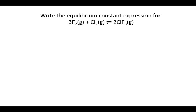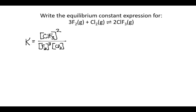Let's do some practice and write the equilibrium constant expression for this reaction. K can be written as the ratio of concentrations of products over reactants. So we'll start with the concentration of our product ClF3 raised to the stoichiometric coefficient of 2, divided by the concentration of F2 raised to the power of 3 and Cl2 raised to the power of 1 — this would be Kc. For Kp, we write the partial pressure of ClF3 squared divided by the partial pressure of F2 to the third power times the partial pressure of Cl2 to the first power.